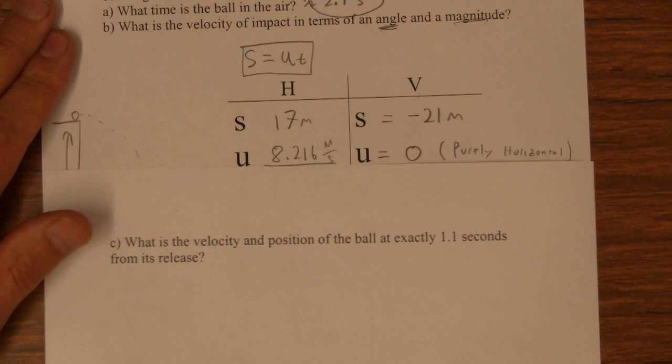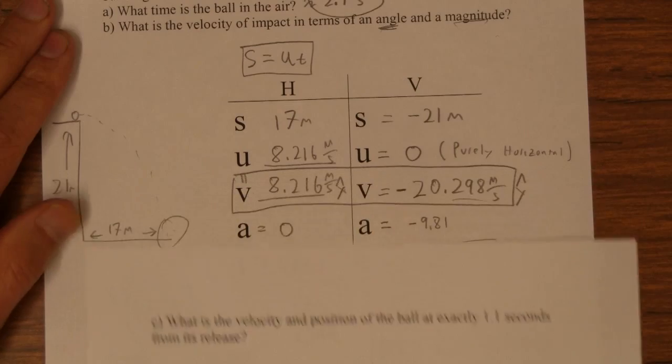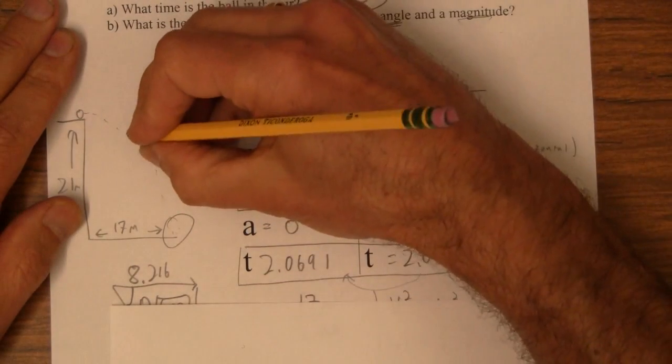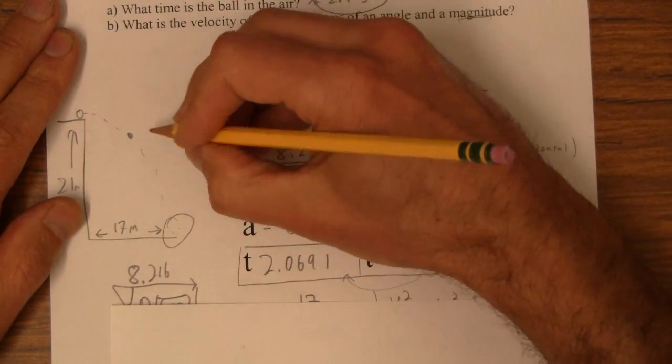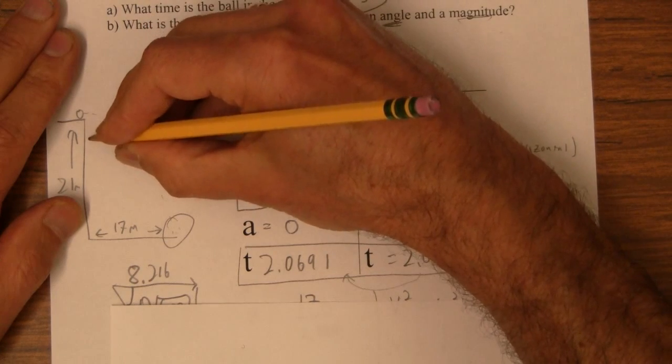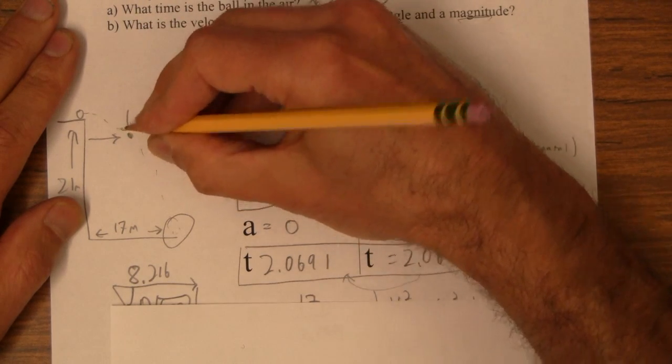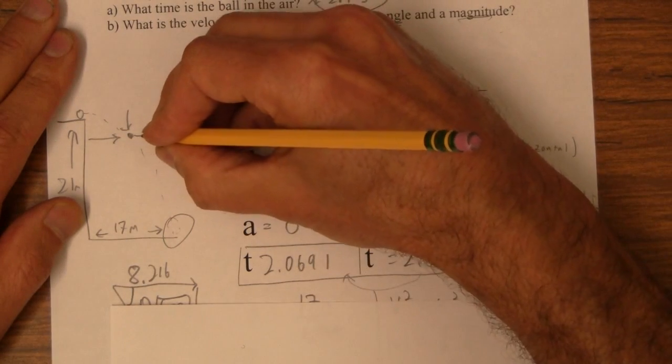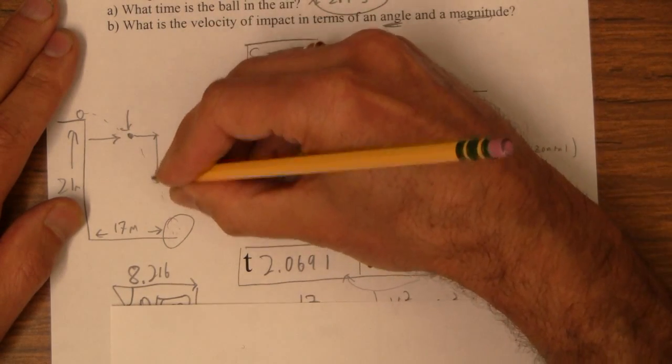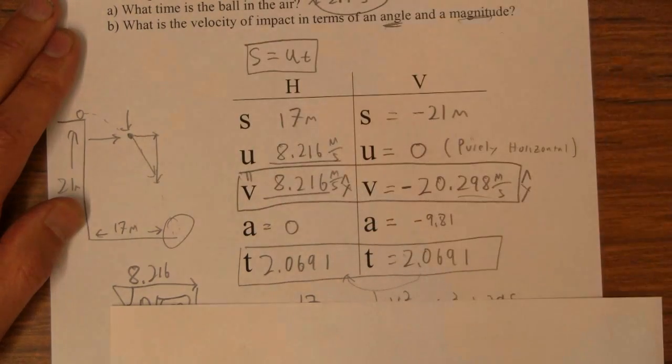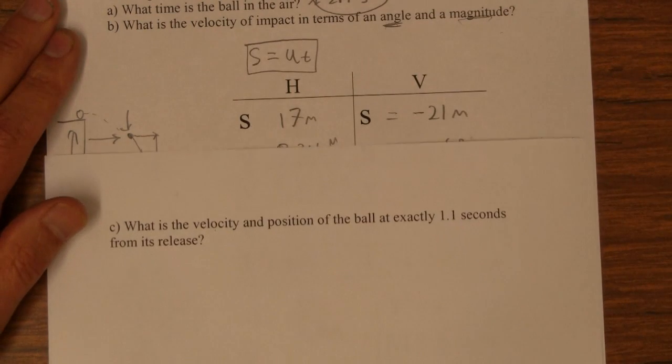And C says what is the velocity and position of the ball 1.1 seconds from its release. So here's the ball in mid-air, it's like right there. And we want to know how far over it is and how far down it is, and we also want to know how fast it's moving to the side and how fast it's moving down, what this velocity is as an angle and a magnitude.